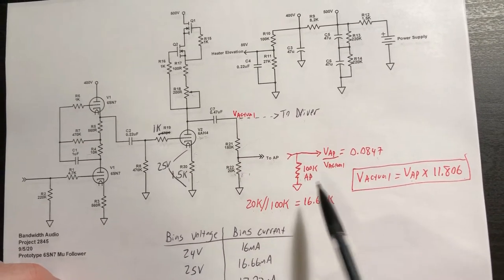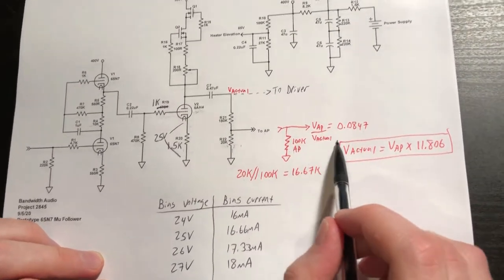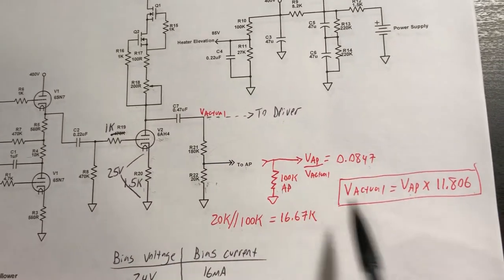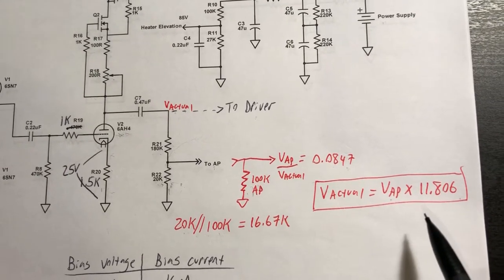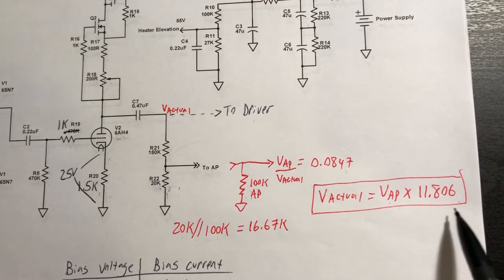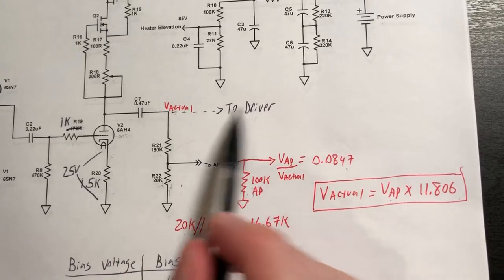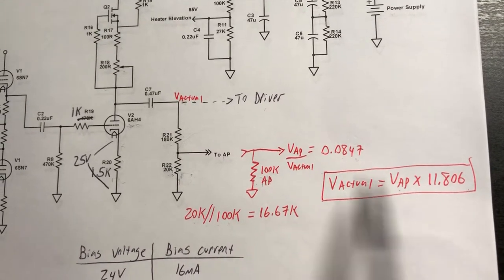We actually do need to account that into our calculations, and so if we solve for what I called V actual, which is the output voltage that we'll actually use to our driver, we need to multiply the measured signal from the AP by 11.806 to get our actual output voltage. We can't measure that directly by connecting the AP here. We need to account for its impedance.